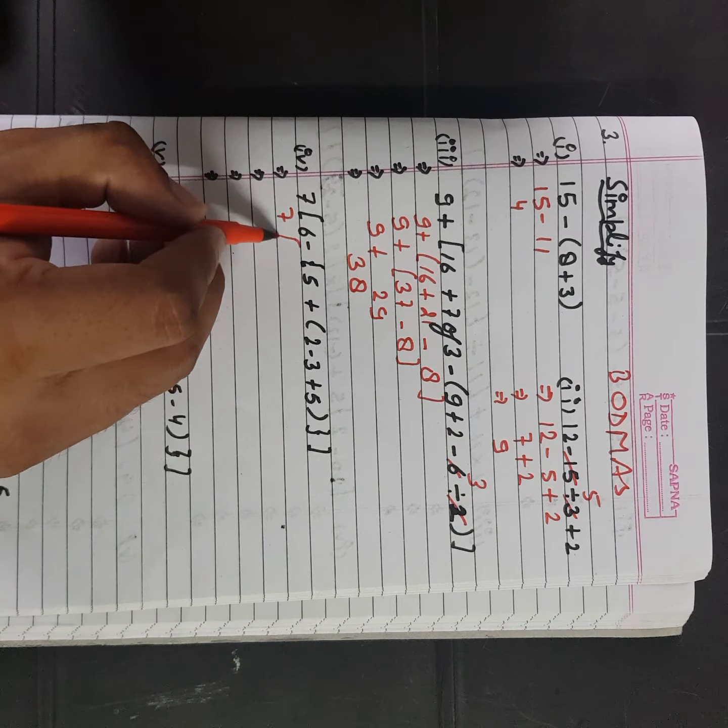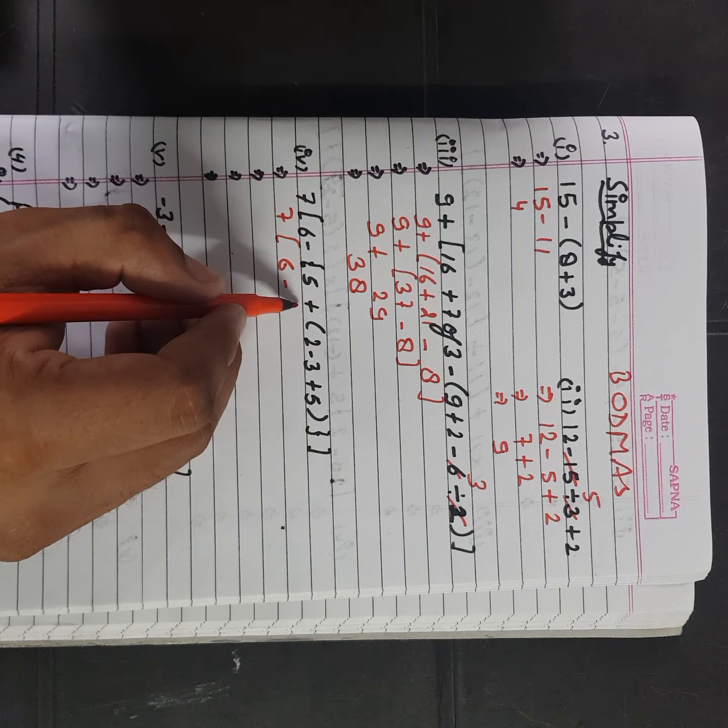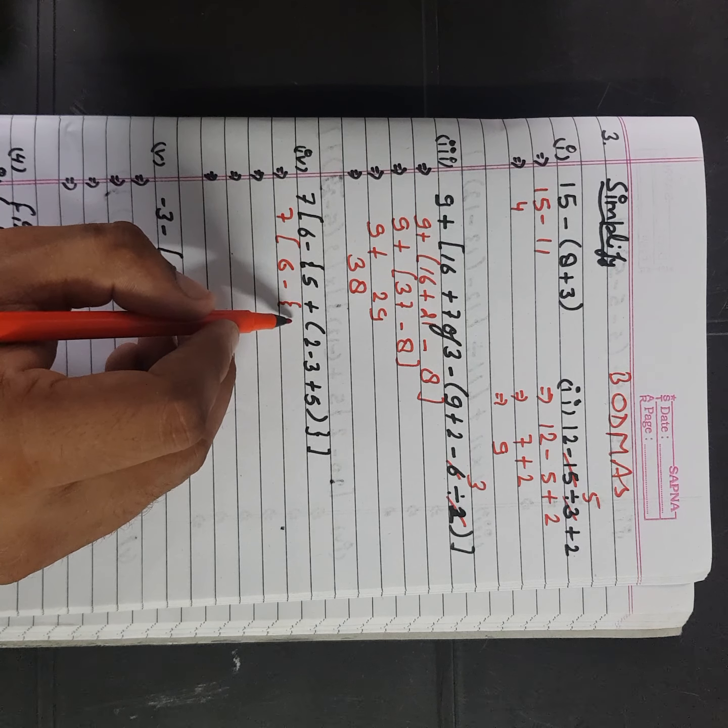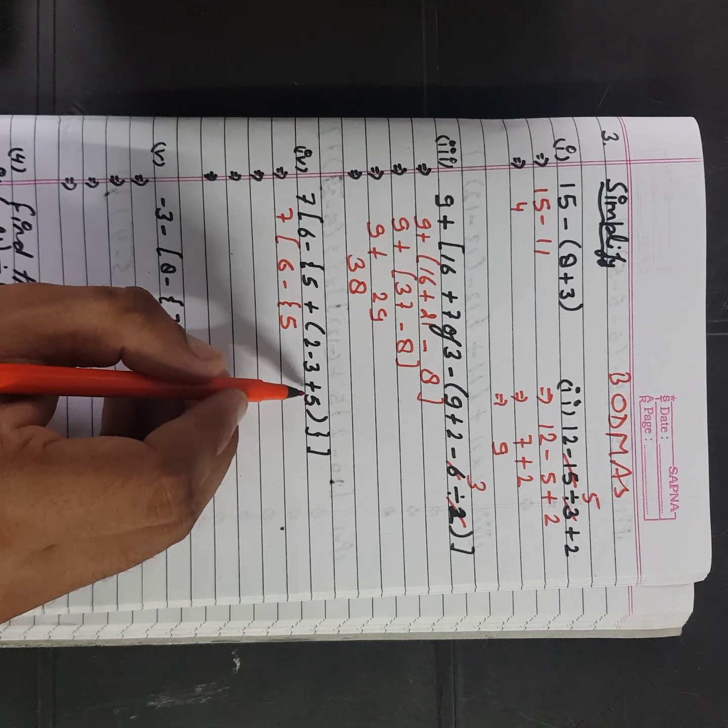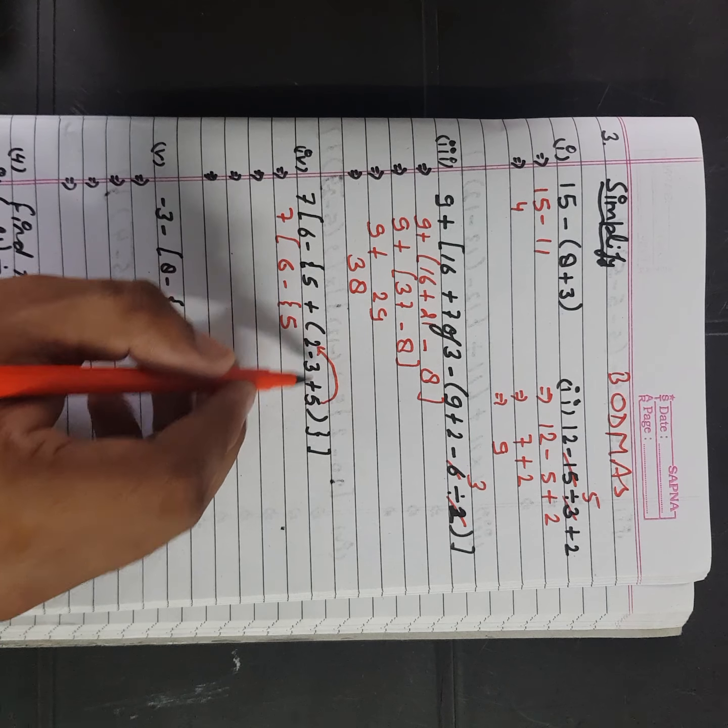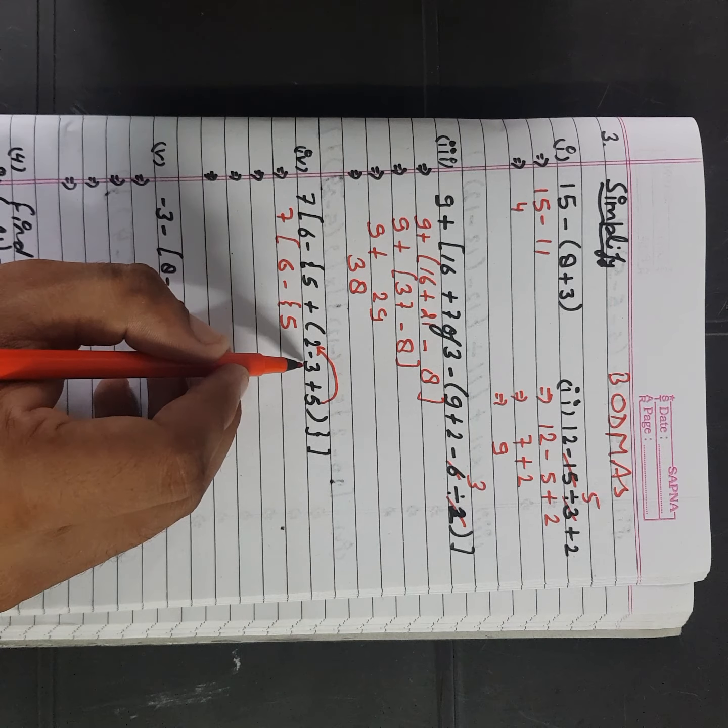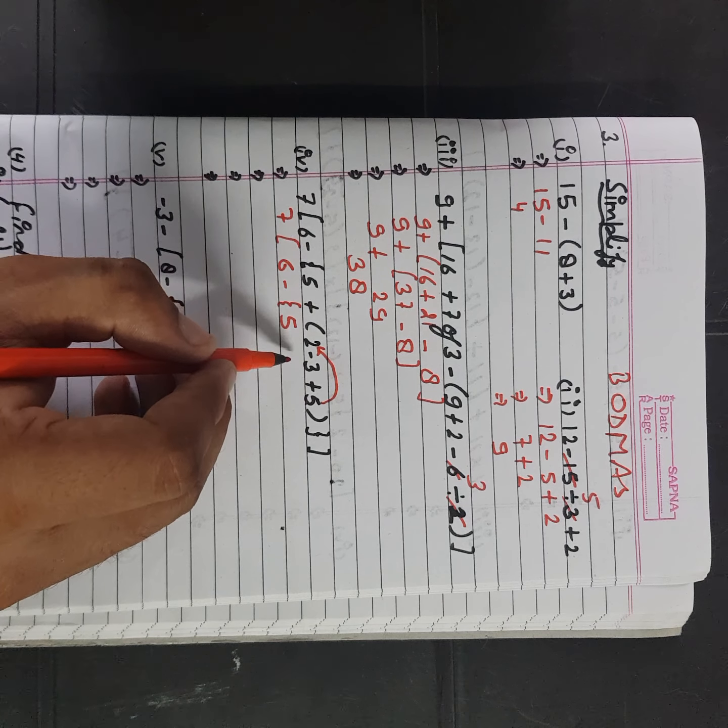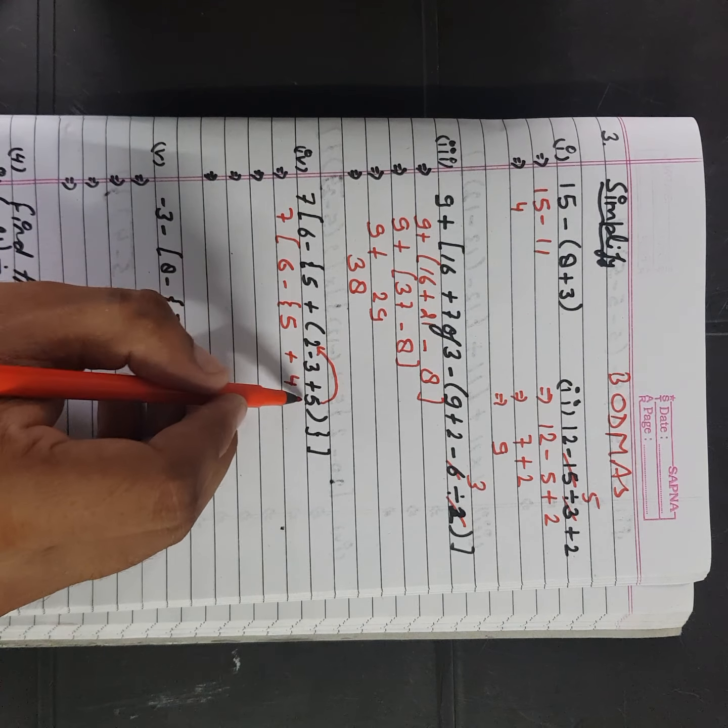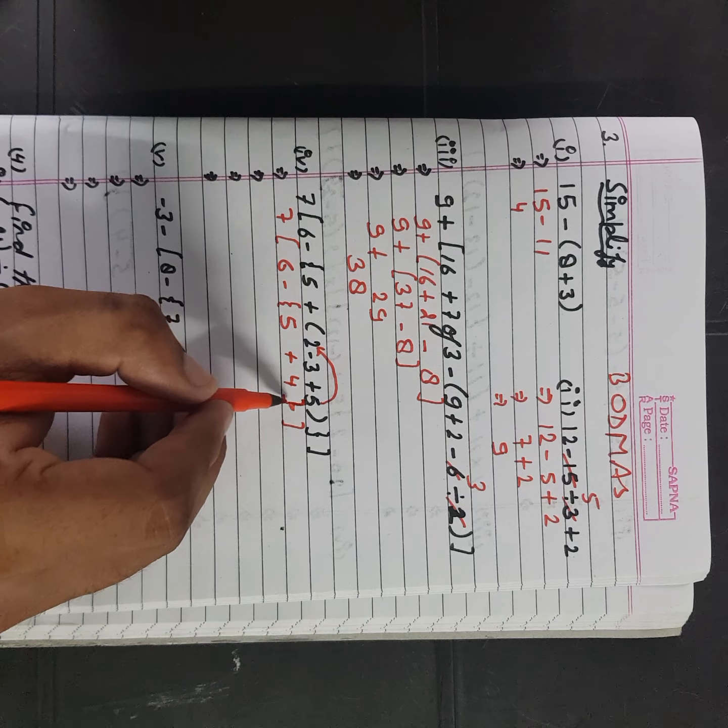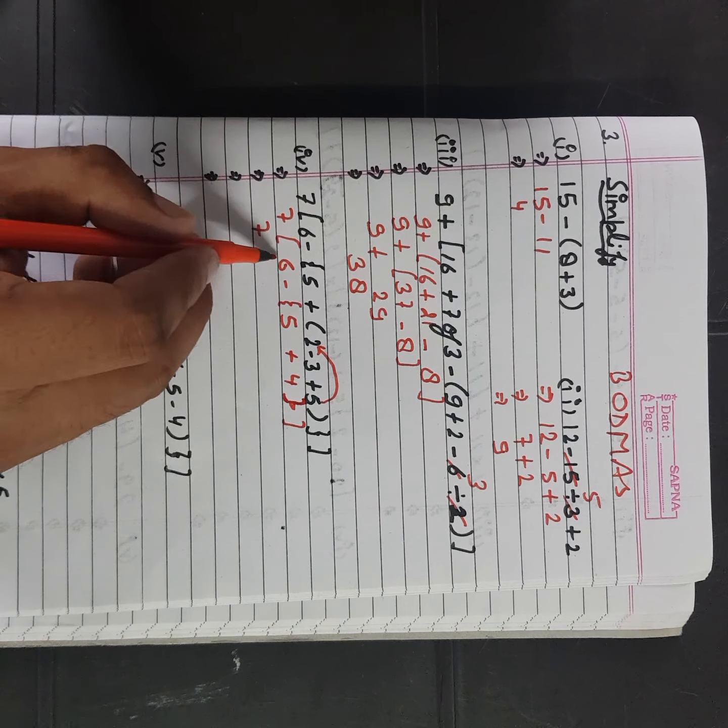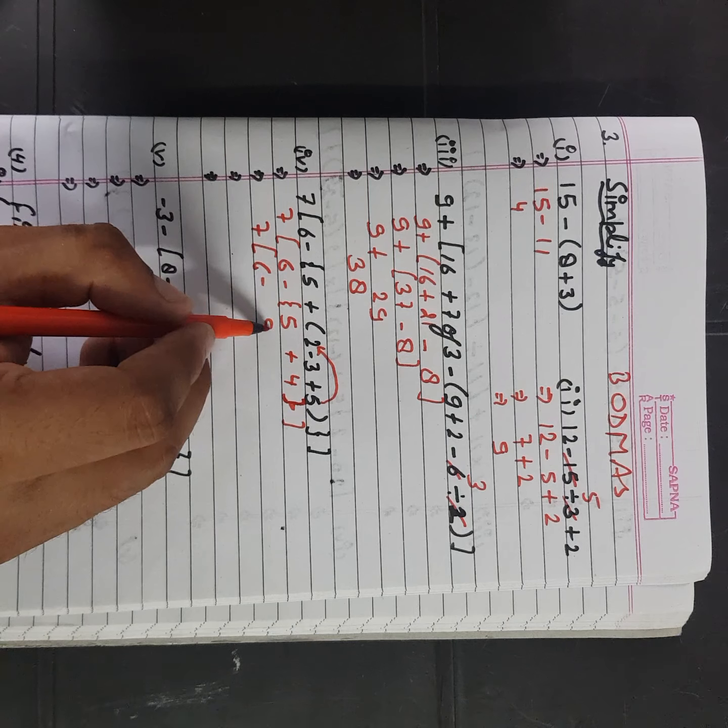Now the next one, 7, 6 minus, 5 will be written as it is. 5 see, we have to add plus plus values, we have to add plus 7 and with 7, how much will it be? 4 right? So plus 4 close. 7 bracket, 6 minus 5, 4, 9.